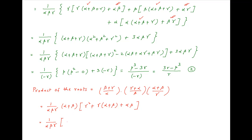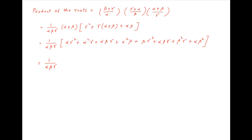Expanding, this equals (1/alpha·beta·gamma) times: alpha·gamma² + alpha²·gamma + alpha·beta·gamma + alpha²·beta + beta·gamma² + alpha·beta·gamma + beta²·gamma + alpha·beta². Combining terms: gamma²·(alpha + beta) + alpha²·(beta + gamma) + beta²·(alpha + gamma) + 2·alpha·beta·gamma.